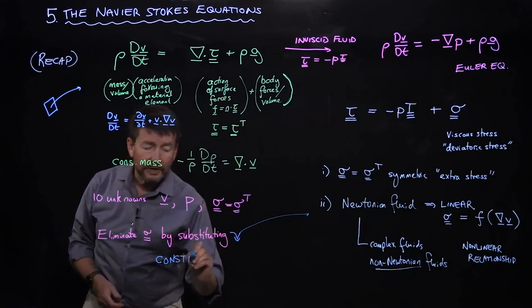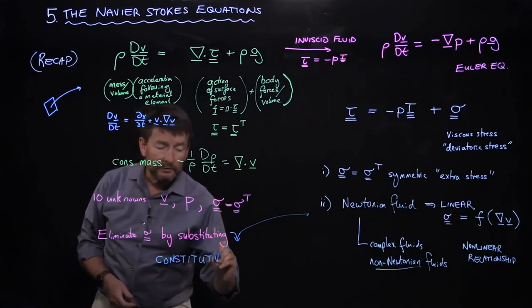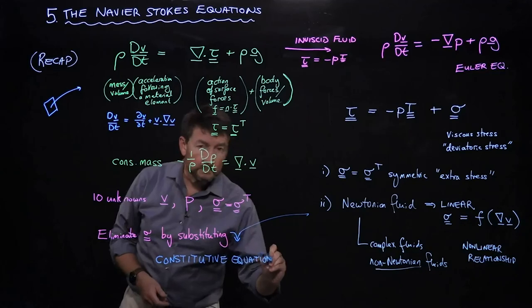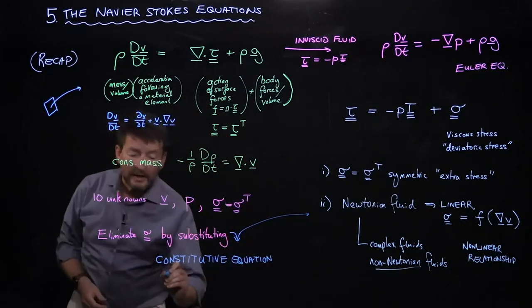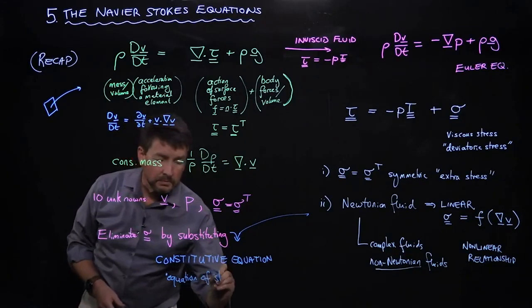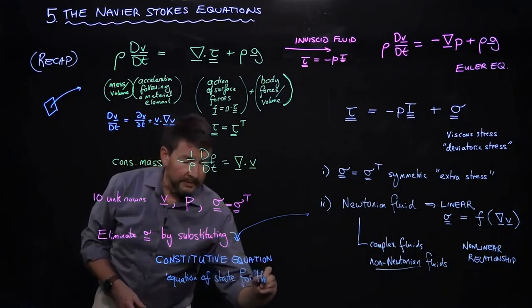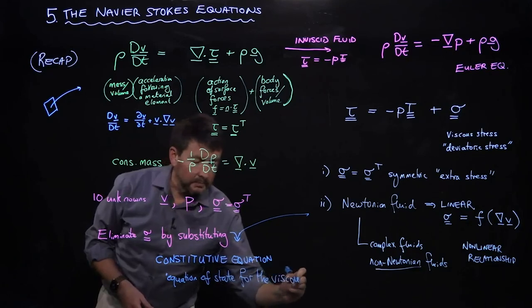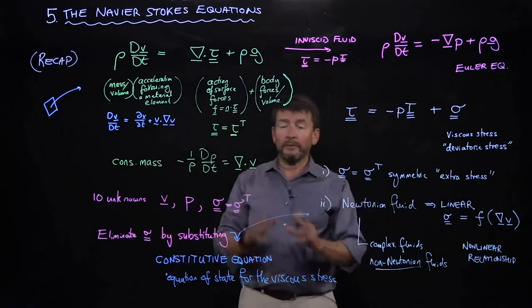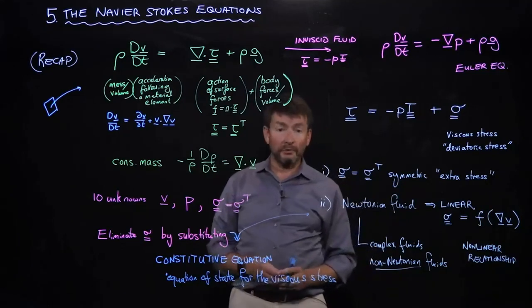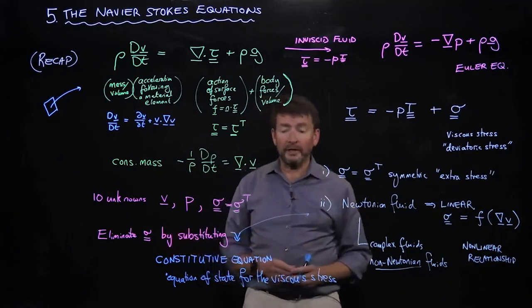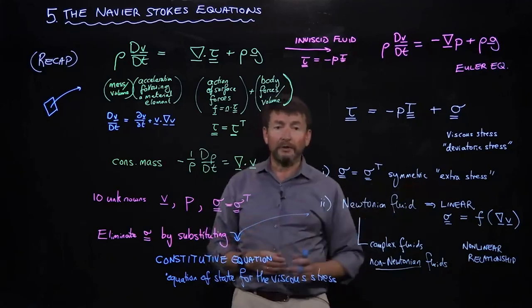Essentially what it is is indeed an equation of state for the viscous stress. If we have a nice equation, we're going to be able to substitute that in here. We'll get rid of six of these unknowns. So really what we need to do next is develop for a Newtonian fluid this idea of an equation of state that's going to relate the stress to the velocity gradients in the material.